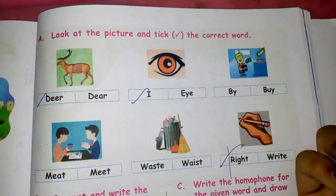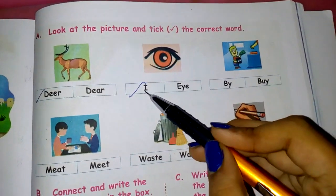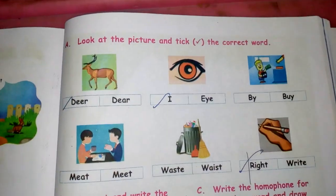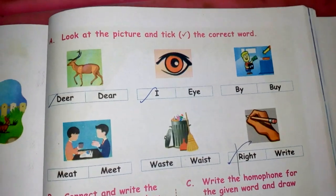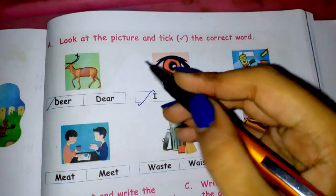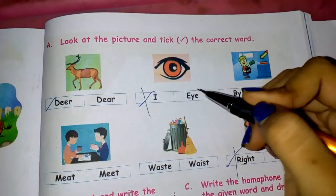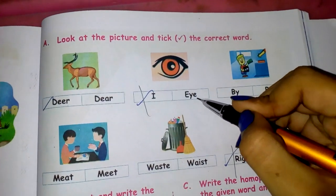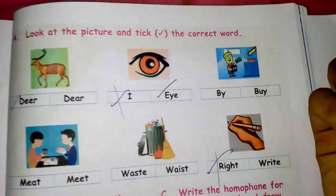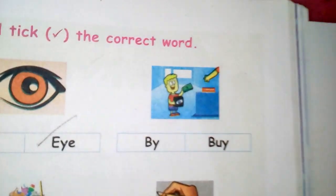Next, 'I' — the pronoun I am. So E-Y-E is 'eye' and I is the pronoun. This is correct.